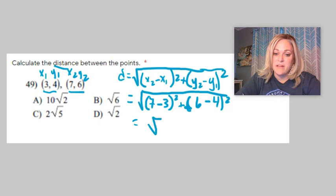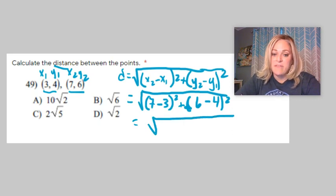Keep going. Bring everything else down. 7 minus 3 is 4. I'll square that. And then 6 minus 4 is 2, squared. And we're getting closer.